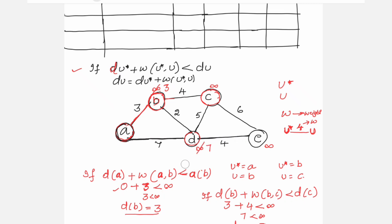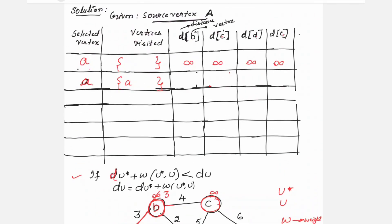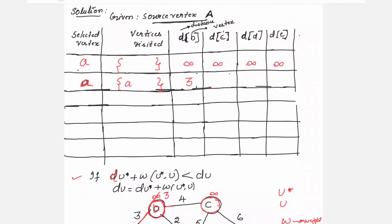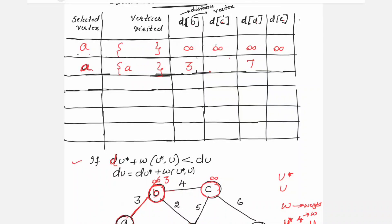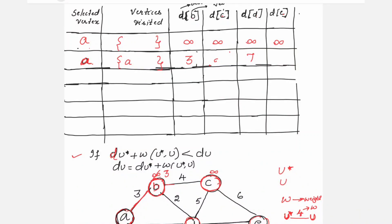Out of the four vertices A needs to reach, two are directly connected — B and D. In the table: A reaching B is 3, A reaching D is 7. For C and E, A does not yet know how to reach them — they are one hop farther — so those distances remain infinity.